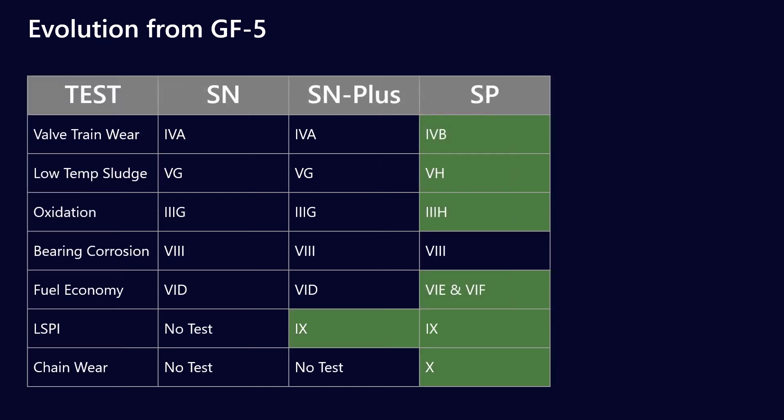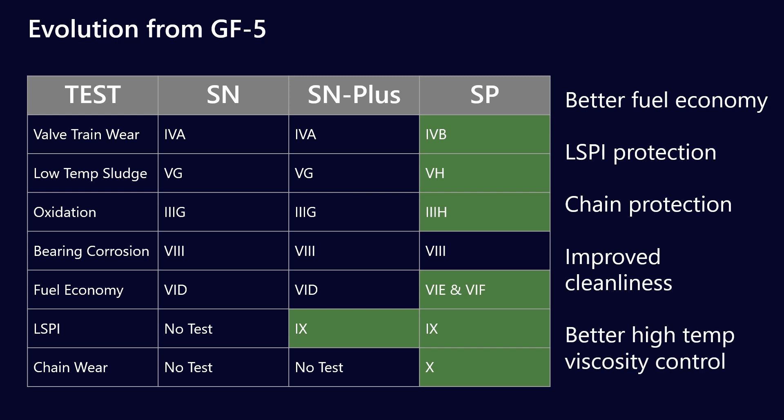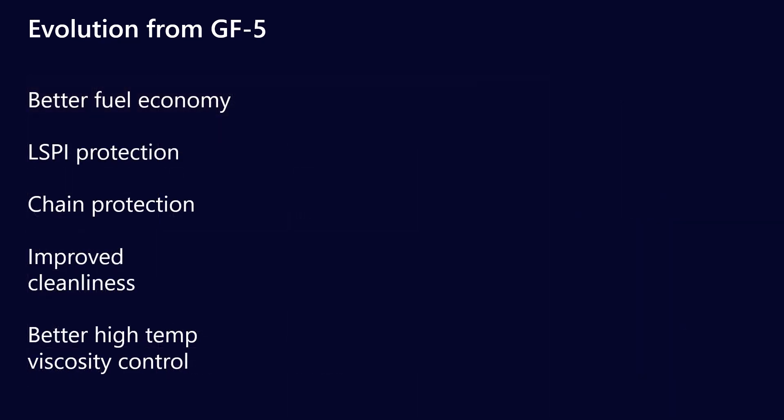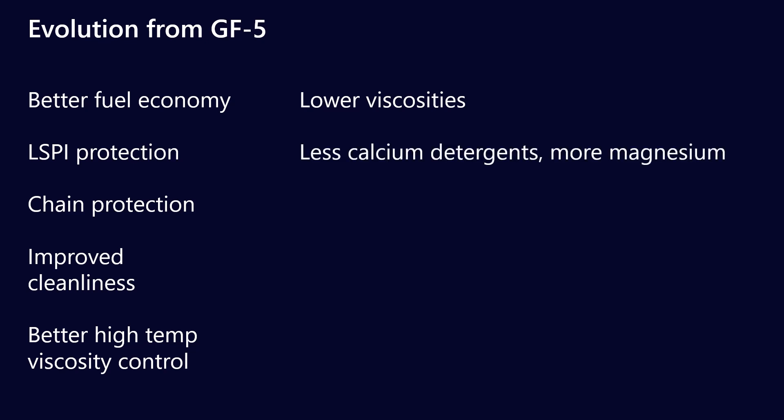What can we expect from these new standards? Effectively, better fuel economy, better LSPI protection, better timing chain wear protection, improved cleanliness, and better high-temperature viscosity control. What in the formulation will drive those benefits? Better fuel economy means lower viscosities — GF6 includes a new 0W16 spec, and over time viscosities will keep getting lower as engine OEMs try to meet emissions targets. For LSPI protection, we know calcium detergents contribute to low-speed pre-ignition, so you'll see a lot less of those and probably a lot more magnesium-based detergents.